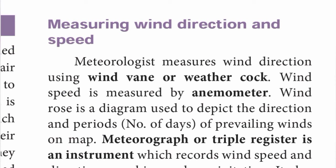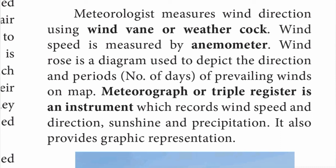Meteorologists measure wind direction using a wind vane or weather cock. Wind speed is measured by an anemometer. A wind rose is a diagram used to depict the direction and periods of prevailing winds. A meteorograph, or triple register, is an instrument which records wind speed and direction, sunshine, and precipitation, and also provides graphic representation.